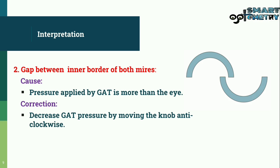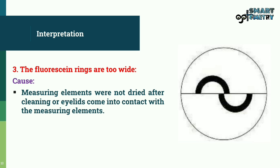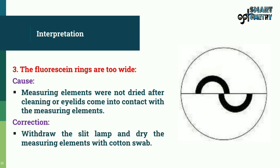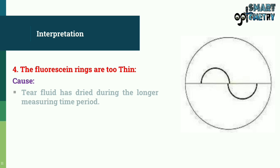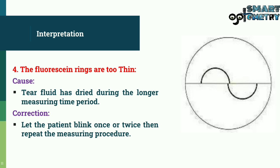Fluorescent rings that are too wide indicate that the measuring elements were not dried after cleaning, or eyelids came into contact with the measuring elements. Correct by withdrawing the slit lamp and drying the measuring elements with a cotton swab. Fluorescent rings that are too thin indicate the tear fluid dried during a longer measuring time — correct by letting the patient blink once or twice, then repeat the procedure.